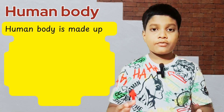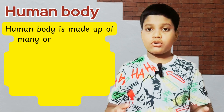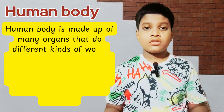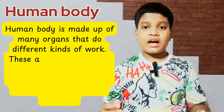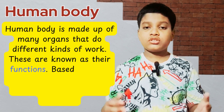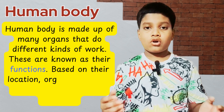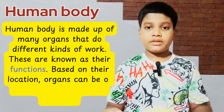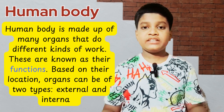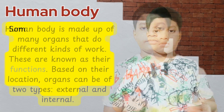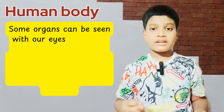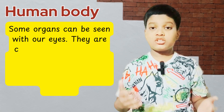The human body is made up of many organs that do different kinds of work. These are known as their functions. Based on their location, organs can be of two types: external and internal. Some organs can be seen with our eyes — they are called external organs.